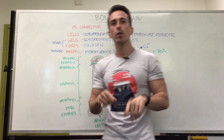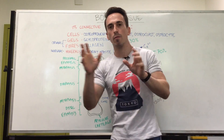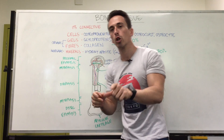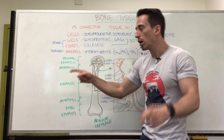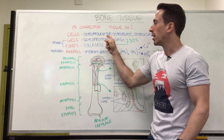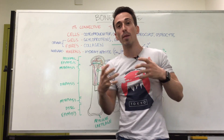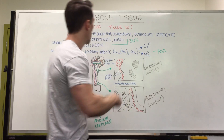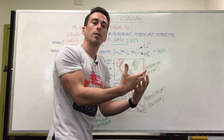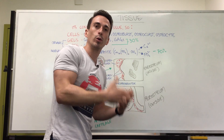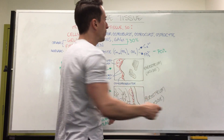But first, let's have a look at the cells, gels, and fibers that make up bony tissue. The cells of bony tissue include osteoprogenitor cells. 'Osteo' as a prefix means bone, and 'progenitor' means it's going to create something — so these are basically the stem cells of our bony tissue. Then we've got osteoblasts. The 'blast' tells you it's building, so these are the bone-building cells. They release a substance called osteoid, which helps build bone.